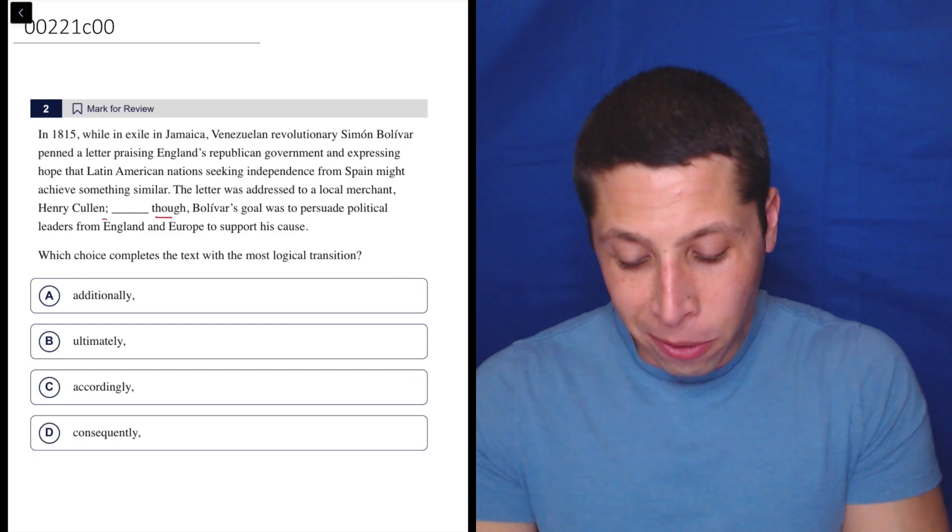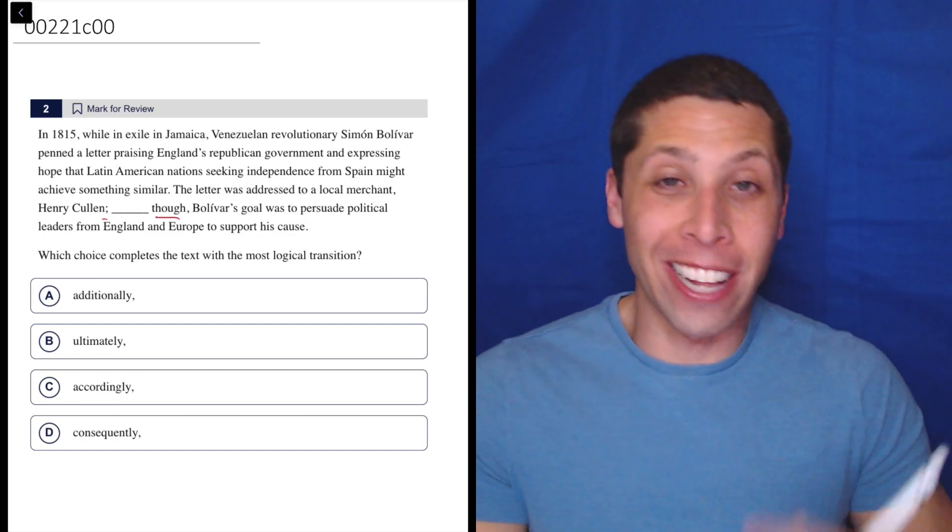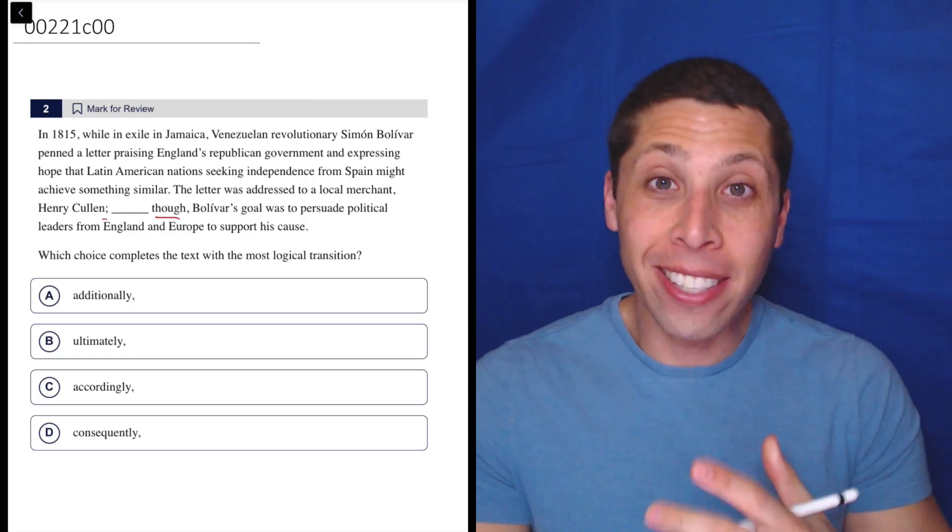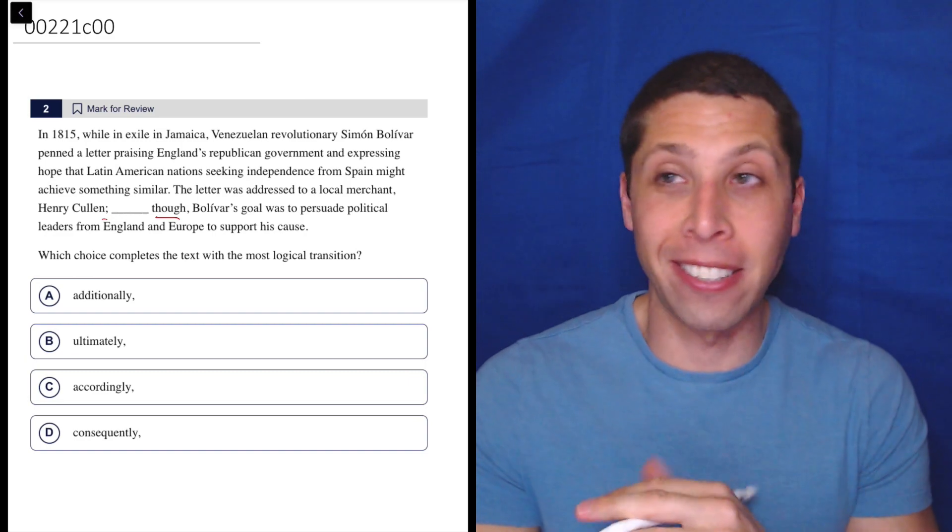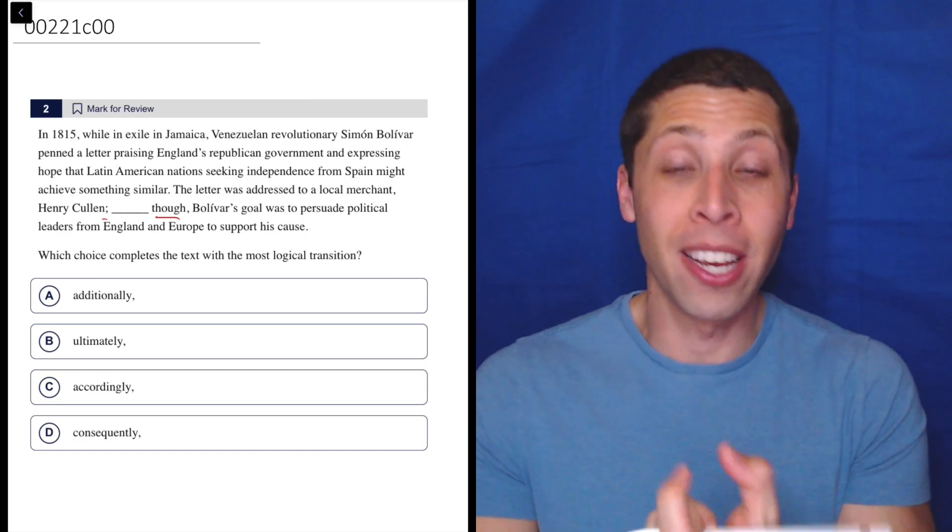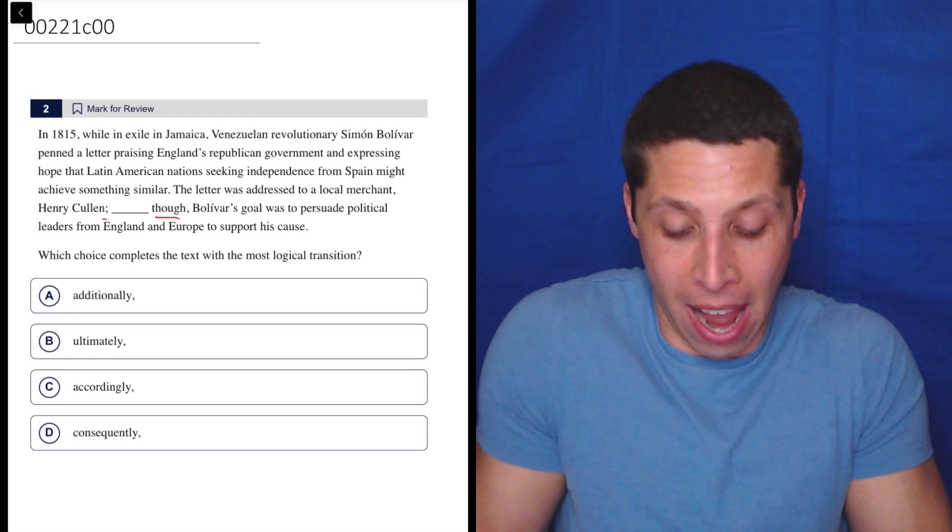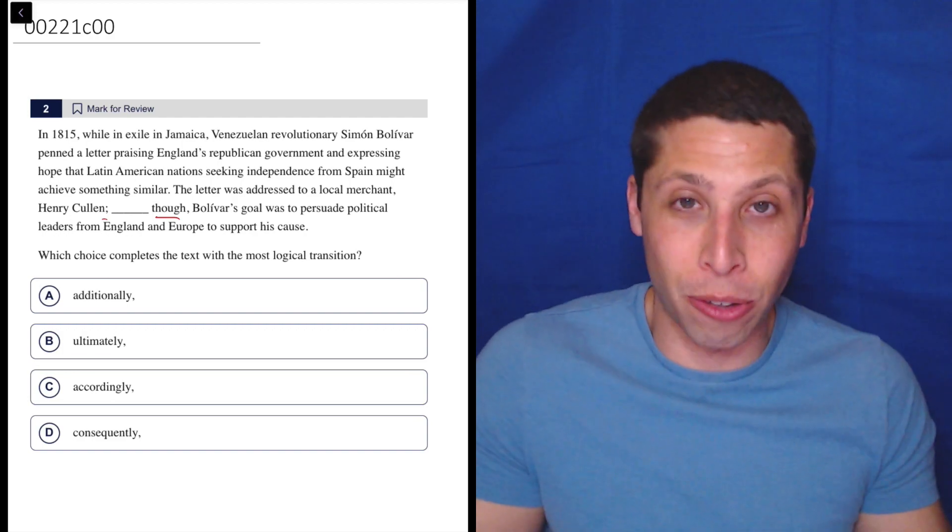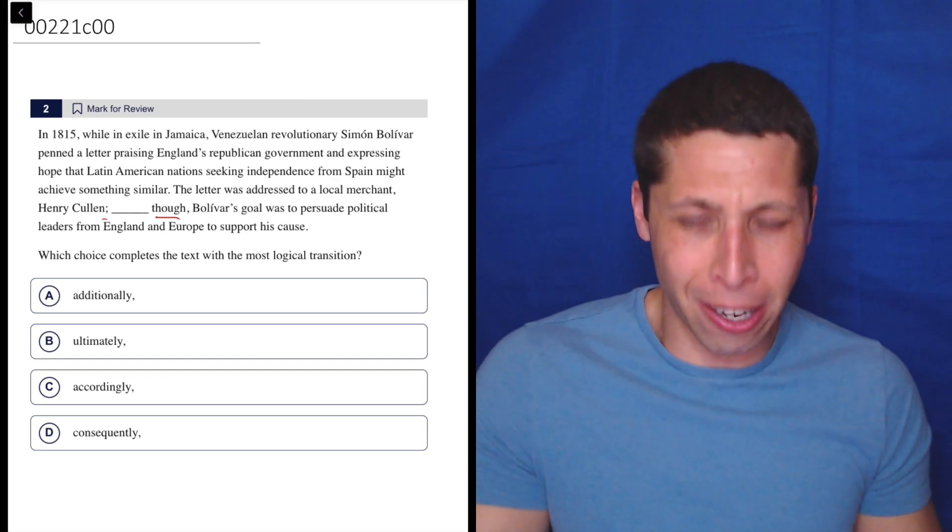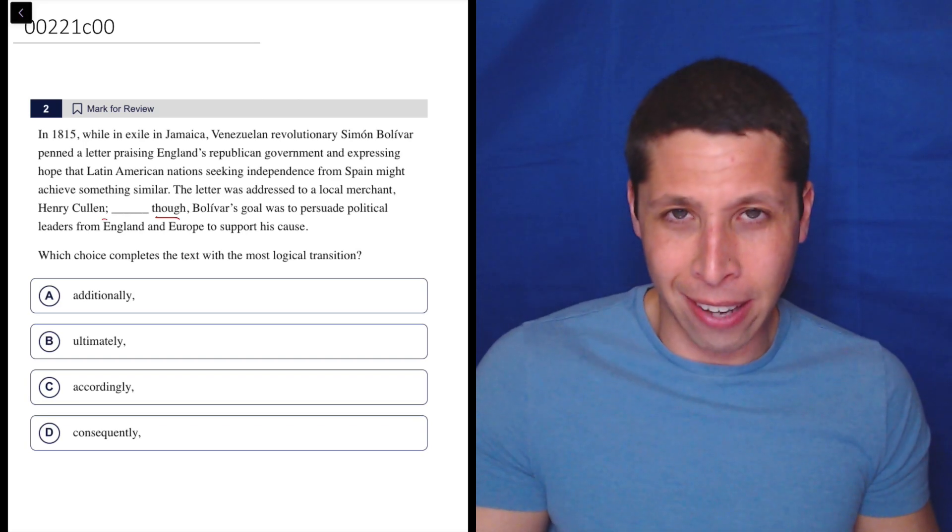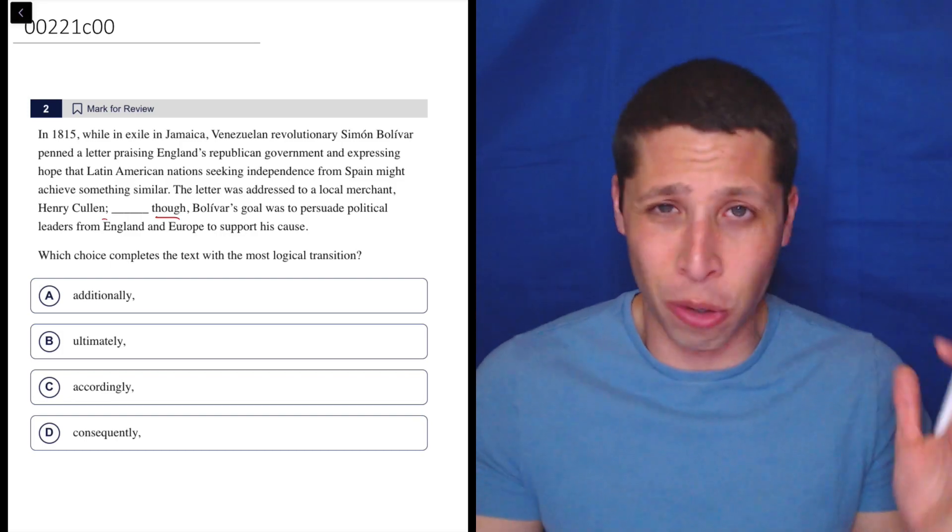Wait a minute. How are we adding a transition when there's already a transition there? That's so weird. This is very strange. I've never seen anything like this before and maybe we never will again. This is the SAT throwing in a really weird twist. So normally we would just have the blank where the though is, and then we pick a contrast word because there's a contrast between him addressing a letter to a local merchant and trying to persuade political leaders to change a policy. It's a weird situation. I don't even understand what's going on.